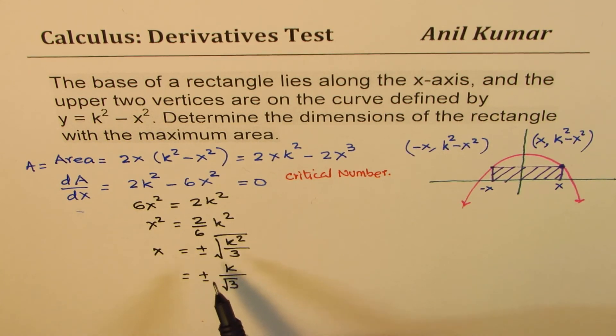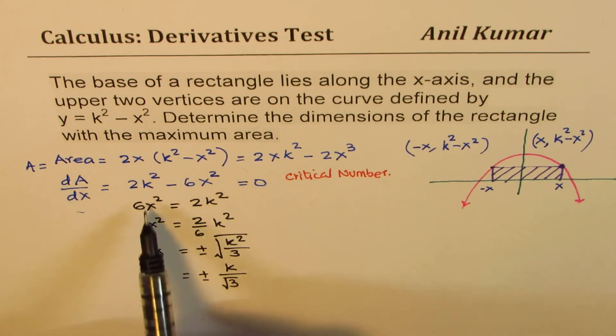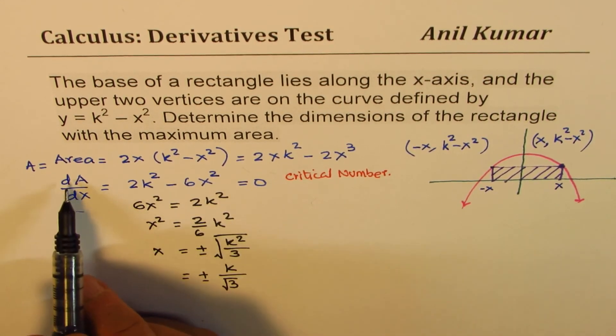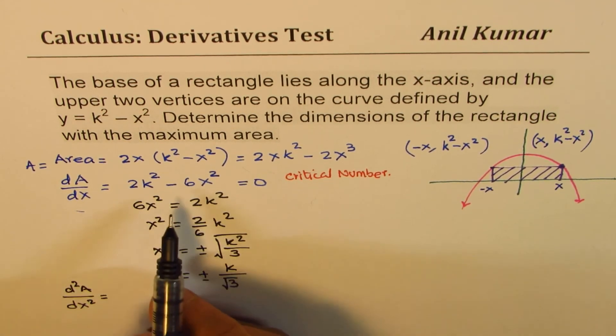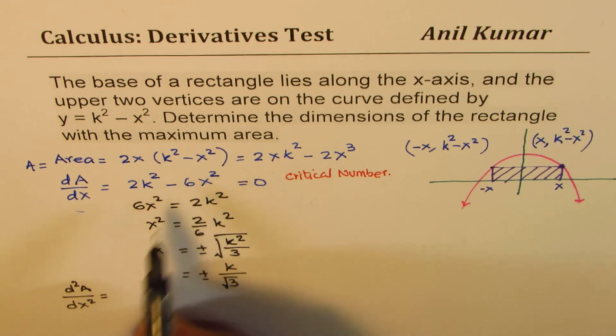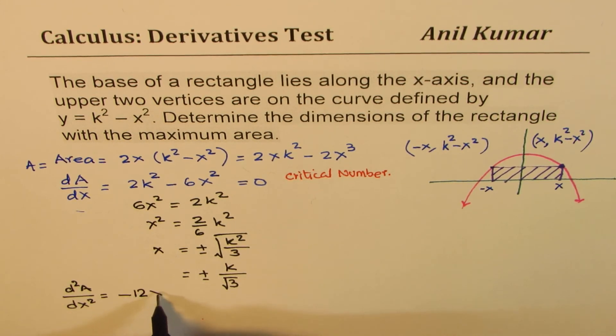Now, you have also to prove that this critical number should represent a maximum. Now, how do we do that? So one way is that we can actually find the second derivative of this function. So if I find the second derivative of this function, that is d2A by dx squared, what I get here is, this is a constant term, and here I get minus 12x.